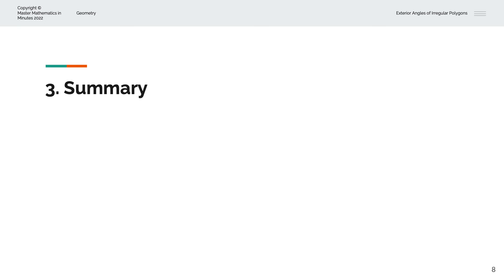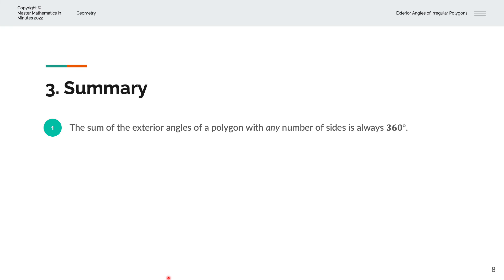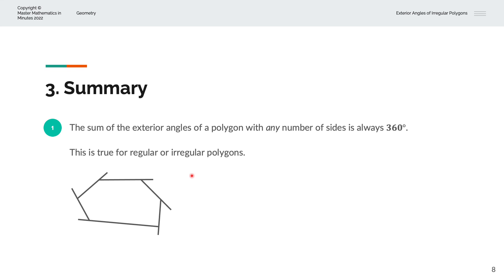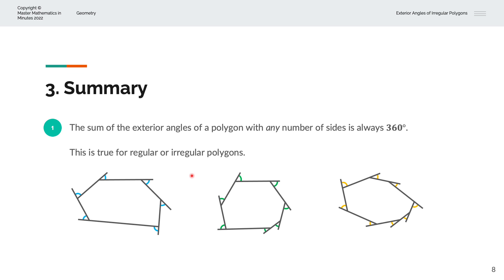To summarize: the sum of the exterior angles of a polygon with any number of sides is always 360 degrees, and this is true for regular or irregular polygons. Irregular polygons have sides of not equal length. Our examples included polygons with 6 sides and 6 exterior angles, 7 sides and 7 exterior angles, and 8 sides and 8 exterior angles — all irregular polygons. Thank you very much for watching. This is Master Mathematics in Minutes.